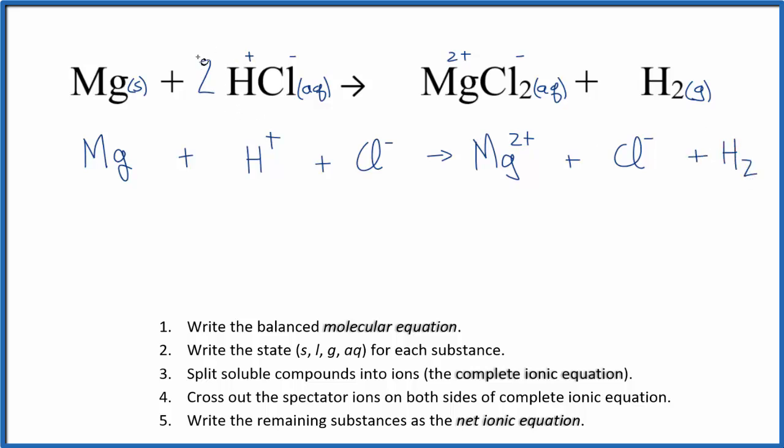We need to take into account the coefficients though, that's why we balanced the equation. So we have 2 of the hydrogen, the H plus, and 2 of the Cl minus. We also over here, we have 1 Mg, but we have 2 chlorines. So when this dissociates, we'll end up with these 2 chloride ions. So this is the complete ionic equation.